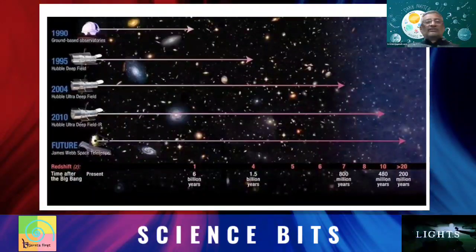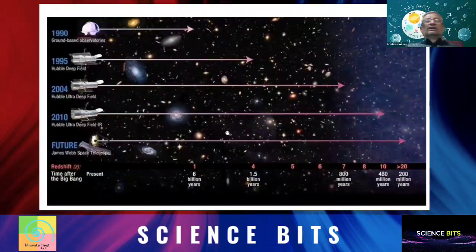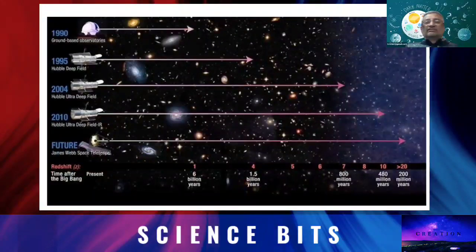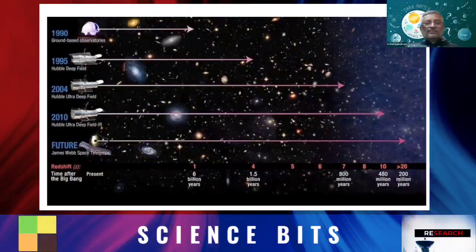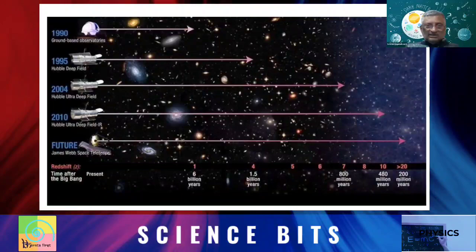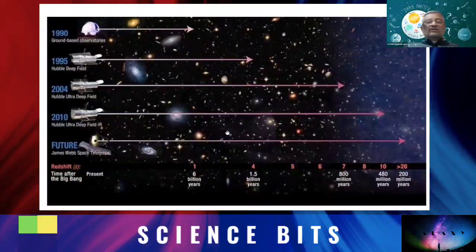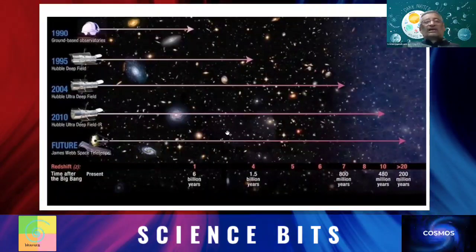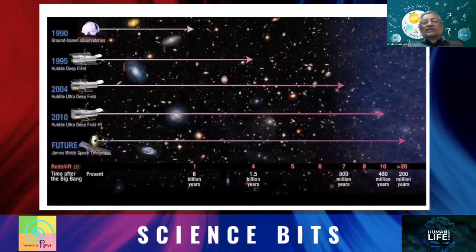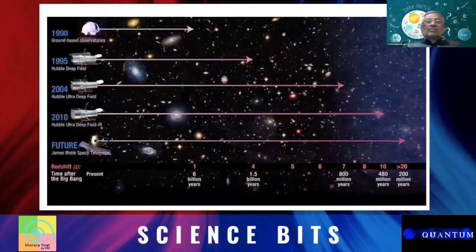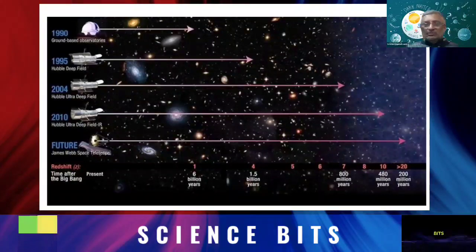As I pointed out, if your telescope is big, it means that you can see far away. If you are going to see far away, it means light has taken so much time to reach you. So in fact, if you have a big telescope, it's a kind of a time machine. You are seeing the time that was in the past.